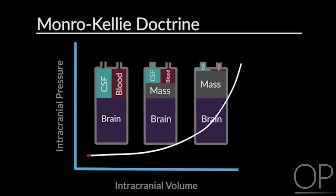When the volume increases too much — usually at volumes greater than 100 to 120 mLs — the intracranial pressure begins to rise, as you can see here. At this point, the intracranial pressure begins to skyrocket with changes in intracranial volume. What we're trying to prevent is reaching that critical point where brain swelling increases so much that the intracranial compartment is unable to maintain its pressure.